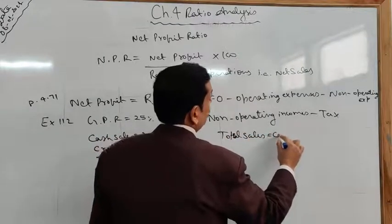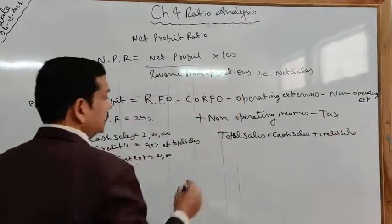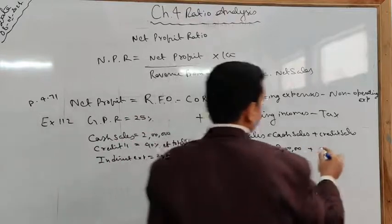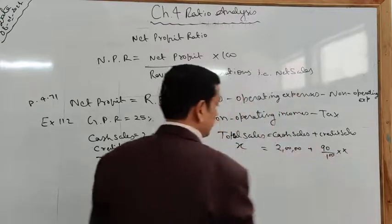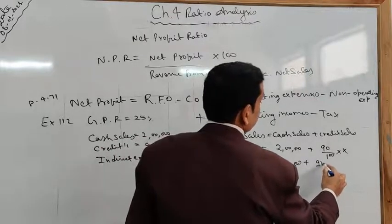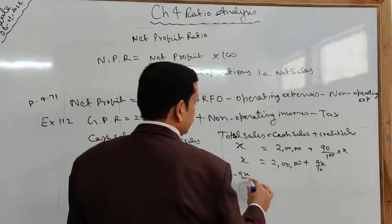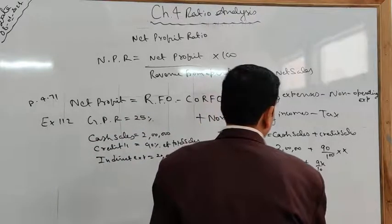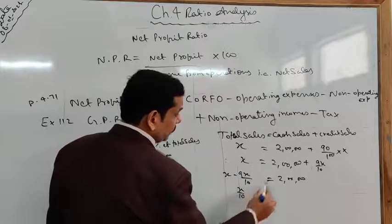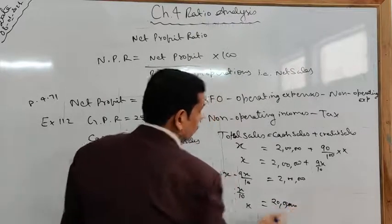Total sales = cash sales + credit sales. Let total sales = x. So x = 2,00,000 + (90/100)x, which gives x = 2,00,000 + 9x/10. Rearranging: x − 9x/10 = 2,00,000, so 10x/10 − 9x/10 = 2,00,000, giving x/10 = 2,00,000, therefore x = ₹20 lakh. Total sales = ₹20 lakh.